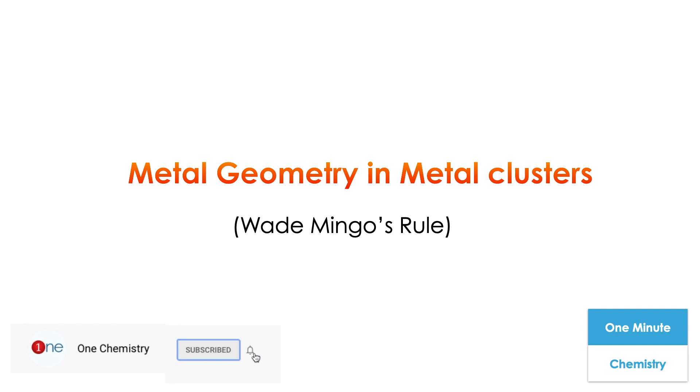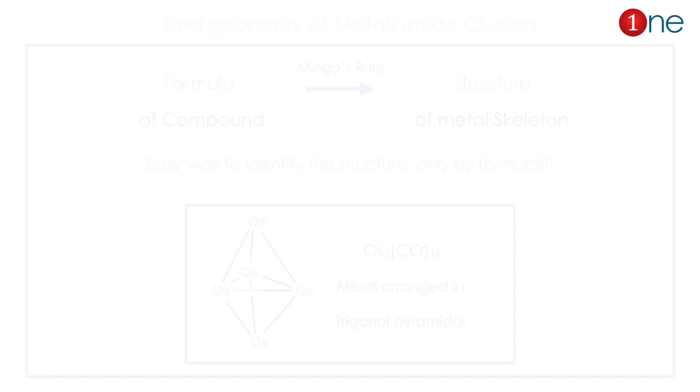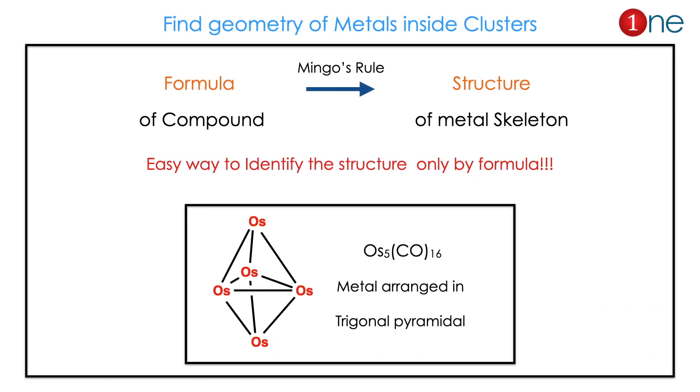Basically the metal geometry there. We will use Wade-Mingo's rules for the prediction. Here the Wade-Mingo's rules will help you. The Wade-Mingo's rules directly predict the formula of the compound to structure of the compound without any experimental analysis.